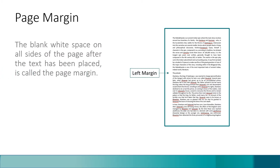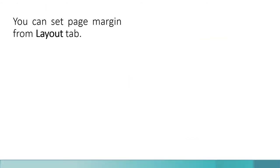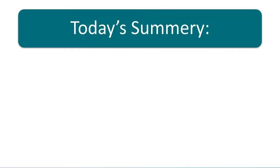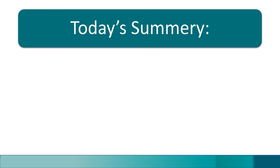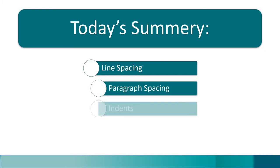Left margin indicates the empty space on the left side of the page. Top margin indicates the empty space on the top side of the page. Right margin indicates the empty space on the right side of the page. Bottom margin indicates the empty space on the bottom side of the page. You can set the page margins from the Margin option under the Layout or Page Layout tab in Microsoft Word. Today we learned about line spacing, paragraph spacing, different types of indents, and page margins.